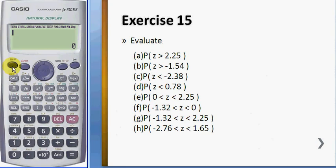And c, we have to use shift 1 7 distribution. This one is less than area, we use P. Negative 2.38, and this is equal to 0.0086.